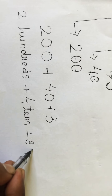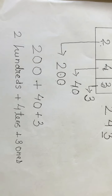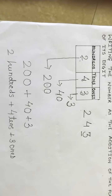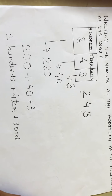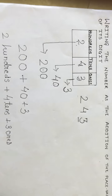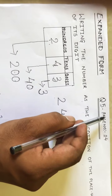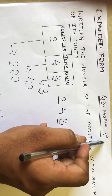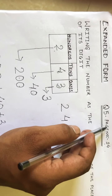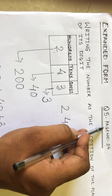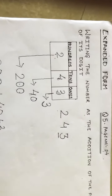Hope you all have understood the topic of expanded notation, or we can call it expanded form. Now you have to do homework: question number five, page number 24 in the workbook. Do all the exercises — question number three, four, and five. Tomorrow I will send the answer key so you can check it. Okay, bye, take care.